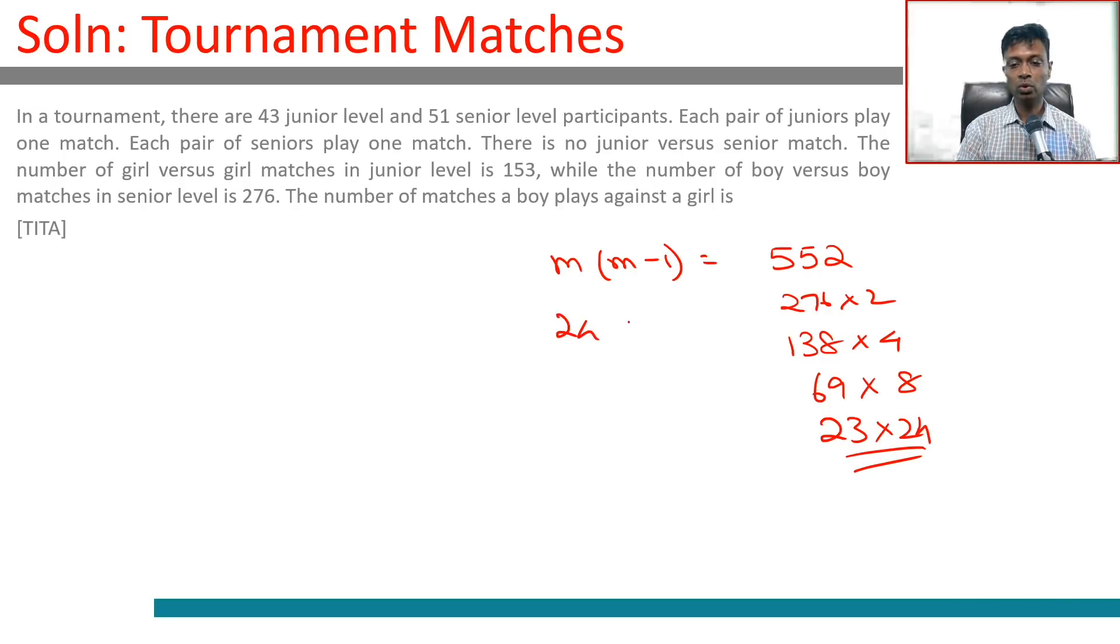This is 24 into 23. So the 43 juniors, boys and girls, there are 25 boys and 18 girls. 51 seniors, boys and girls, there are 24 boys and 27 girls.